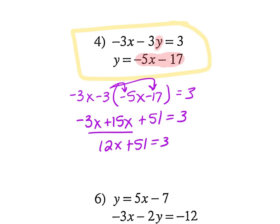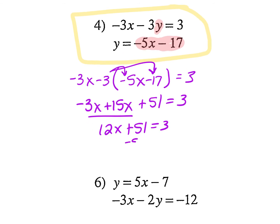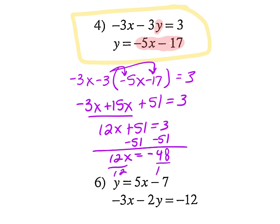Now subtract 51 from both sides. So I get 12x equals negative 48. Then divide both sides by 12. So I got x equals negative 4.